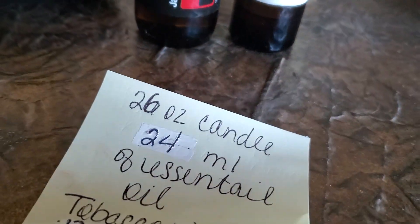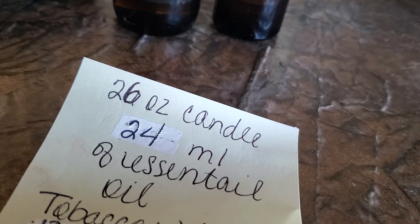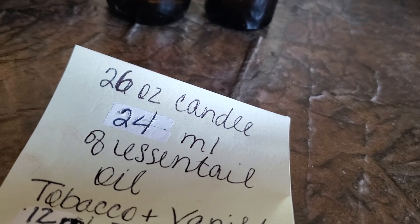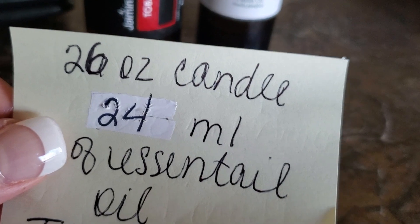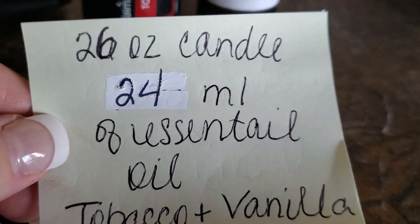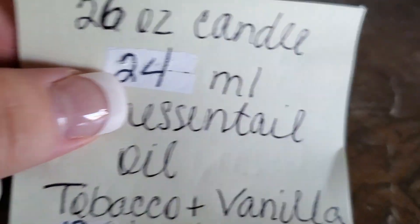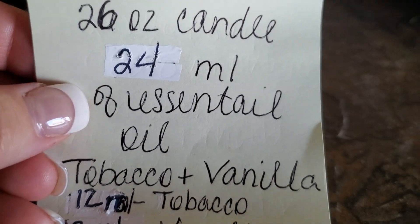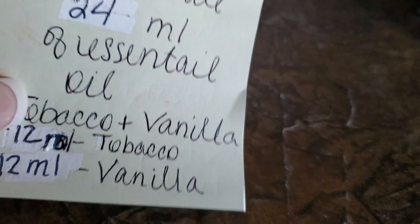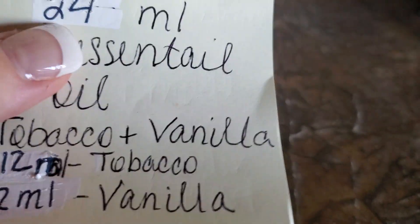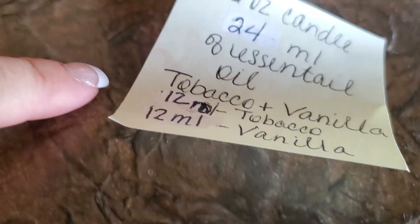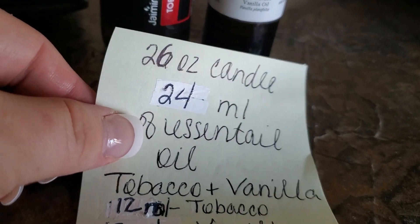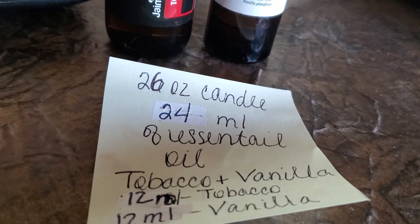Say you have a smaller candle. If you divide 26 in half, that's about a 12 or 13 ounce candle. So if you divide that in half, you would also divide the 24 mls in half. With a 13 ounce candle, instead of 24 mls, you would need 12 mls. So if I still wanted to make a 13 ounce candle with tobacco and vanilla, I would reduce it to 12 mls and split that in half — 6 mls of tobacco and 6 mls of vanilla.